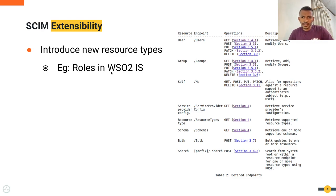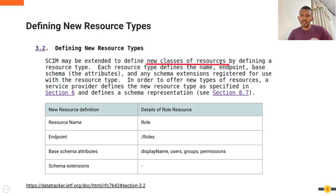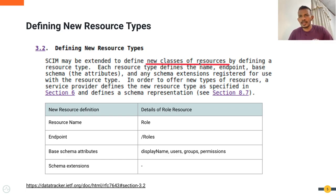In WSO2 Identity Server, we have used the SCIM 2.0 extensions feature to add the roles resource type. This is how the resource type extension is introduced in the SCIM 2.0 specification. We can define new classes of resources by defining a resource type, and when defining those resources we have to define a proper name, endpoint, base schema attributes, and any schema extensions — which we can call extended schema attributes.